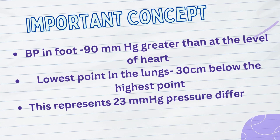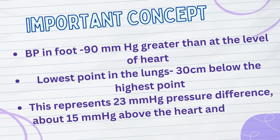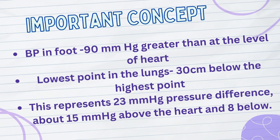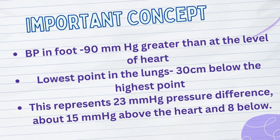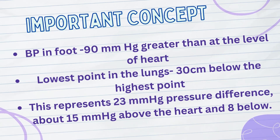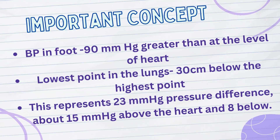In the normal upright adult, the lowest point in the lungs is about 30 cm below the highest point. This represents a 23 mm of mercury pressure difference, about 15 mm of mercury of which is above the heart and 8 below. That is, the pulmonary arterial pressure in the uppermost portion of the lung of a standing person is about 15 mm of mercury less than the pulmonary arterial pressure at the level of the heart, and the pressure in the lowest portion of the lungs is about 8 mm of mercury greater. Such pressure differences have profound effects on blood flow through the different areas of the lungs.